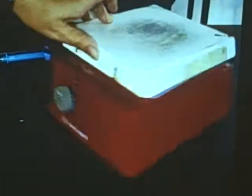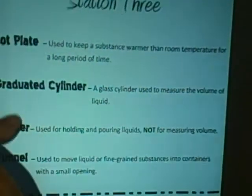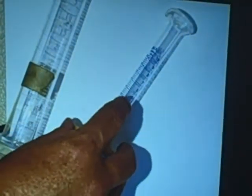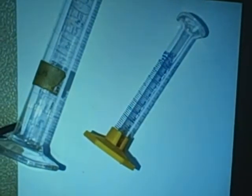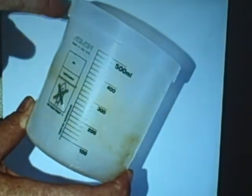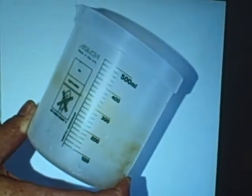A hot plate. These are graduated cylinders. The small marks indicate how much liquid is in the container. This is a beaker — the spout is used to help pour liquids. And this is a funnel.